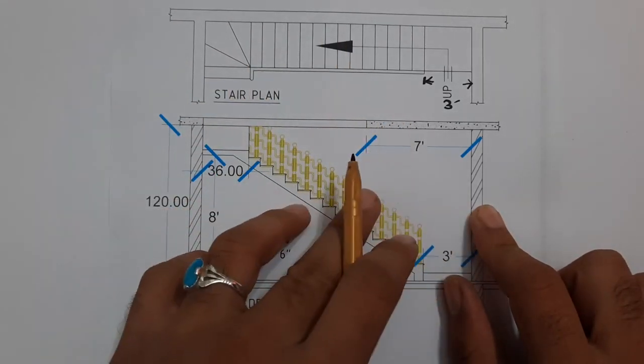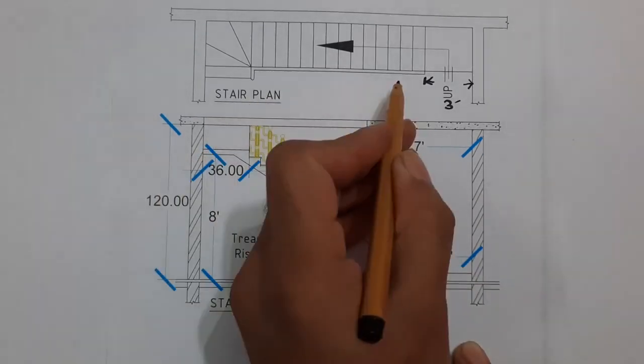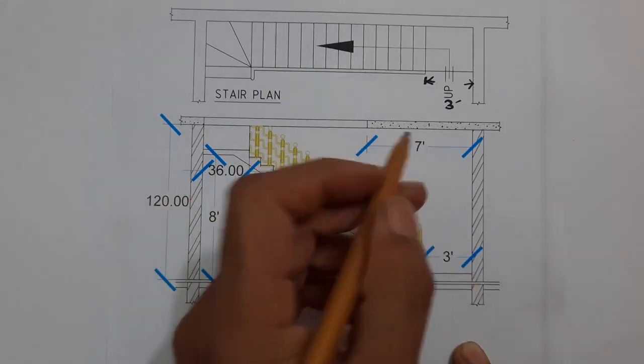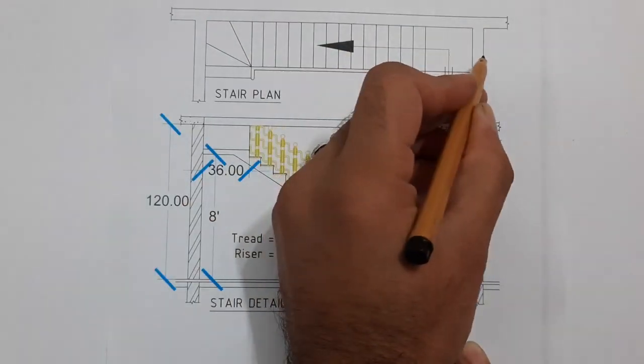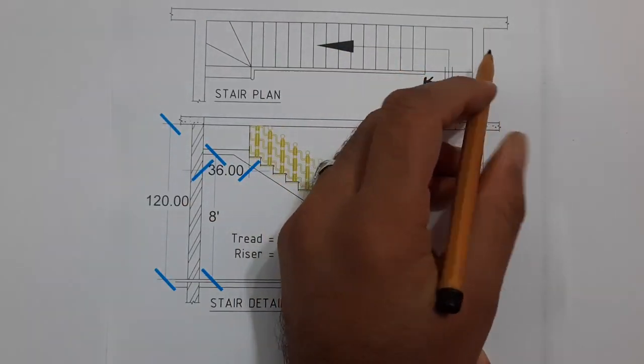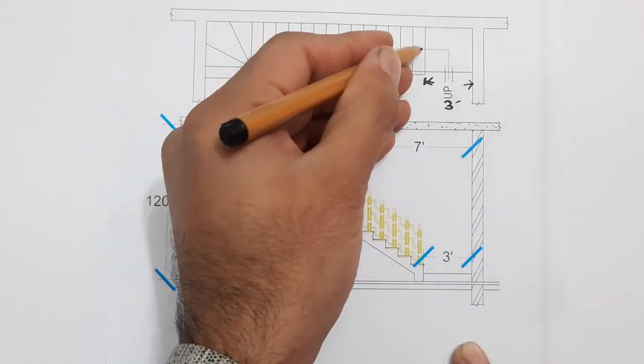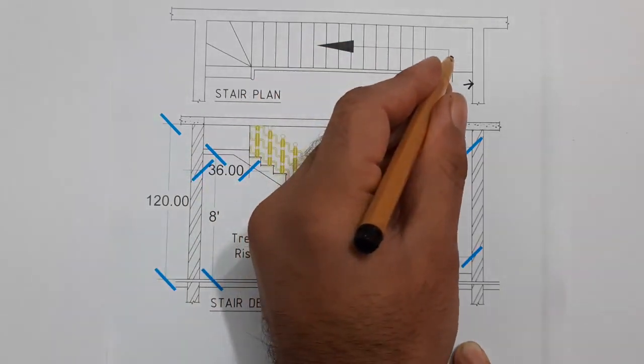Let's start. This is the stair plan from the top view and this is its cross section. Here these are walls which thickness is about nine inches. So this stair width is three feet, but I didn't show here. Just for your understanding, I'm telling you maybe this is three feet or 3.5 feet.